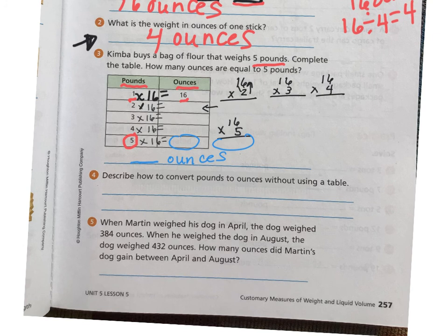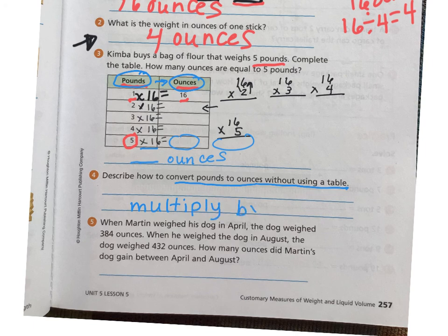All right. Let's look at number four. It says, describe how to convert pounds to ounces without using a table. What if I didn't have this handy dandy table up here? But I wanted to convert pounds to ounces. What could I do to figure that out? Well, we kind of did it up there, didn't we? We did it right here. I can just always take it. I can multiply by 16. We kind of already did that up above, didn't we? Multiply. If I didn't have that table, I could just easily multiply the number by 16.